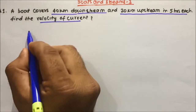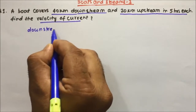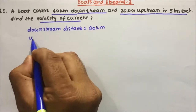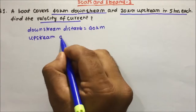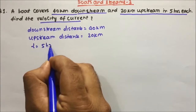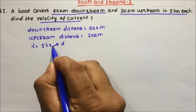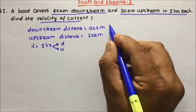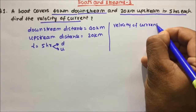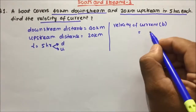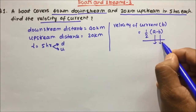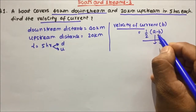First, we write down the data given. Downstream distance is 40 km, upstream distance is 20 km, and time is 5 hours each — 5 hours for downstream and 5 hours for upstream. They are asking the velocity of the current, which means speed of current. We denote speed of current with B, and the formula is: speed of current = 1/2 × (A − B), where A is downstream speed and B is upstream speed.